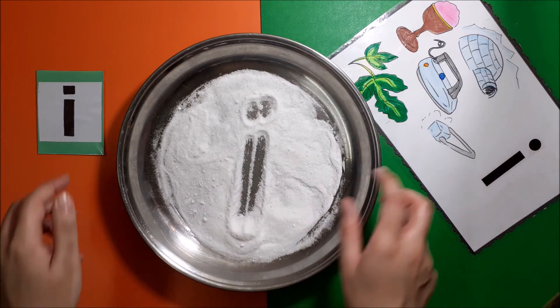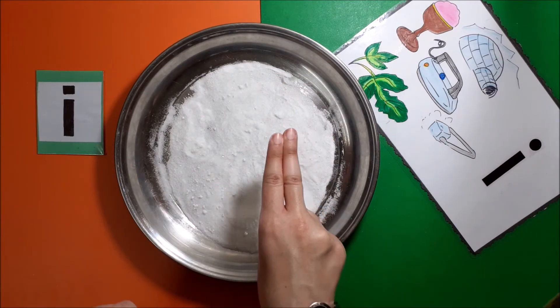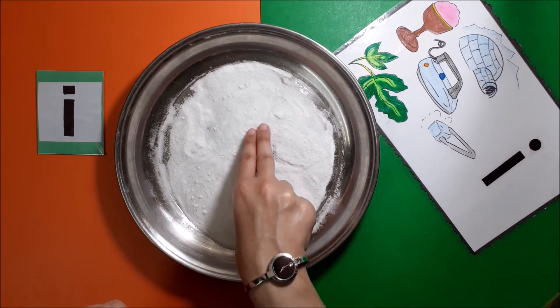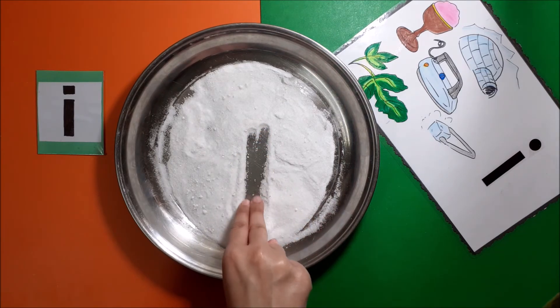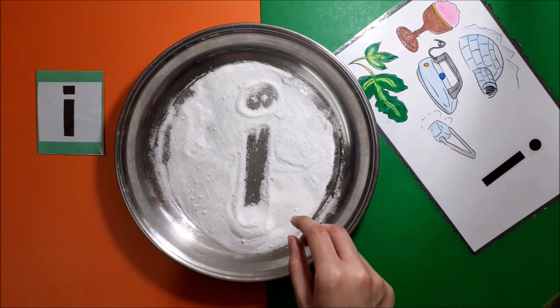Let's try it again. Shake, shake, shake. Use two fingers joined together to make a straight line down. Then go up and put a dot on the top. Very good!